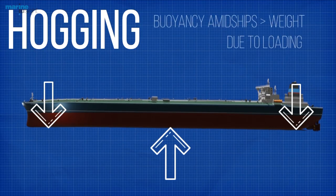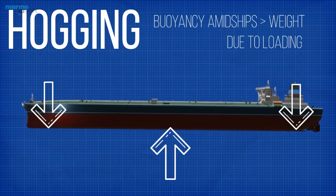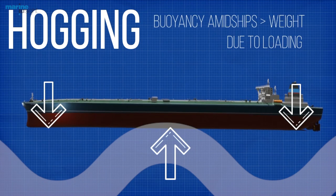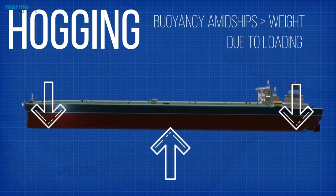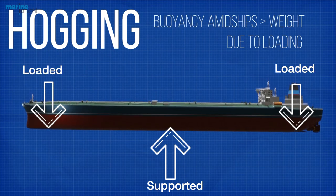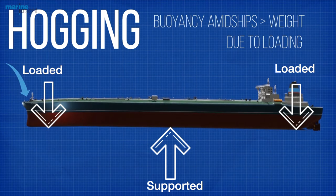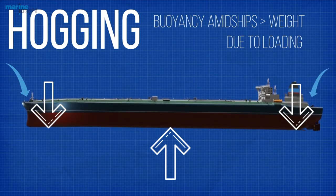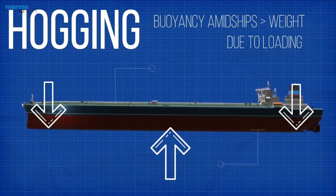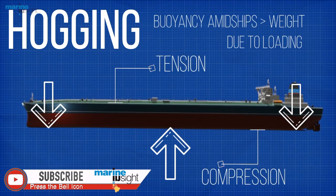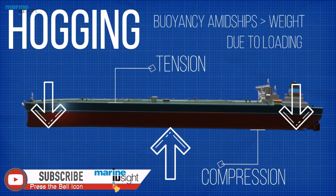When the buoyancy amidships exceeds the weight due to loading, or when the wave crest is at the midship, the ship will hog as a beam supported at mid length and loaded at the end. In this condition, the overall weight is greatest near the bow and stern with buoyancy being larger near midships. This has the effect of bending the structure in the other direction, placing the keel in compression and the deck in tension.